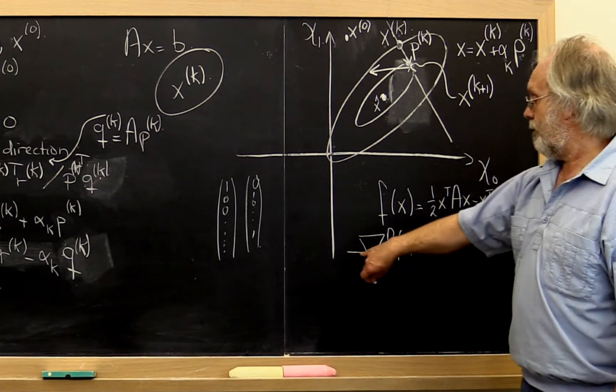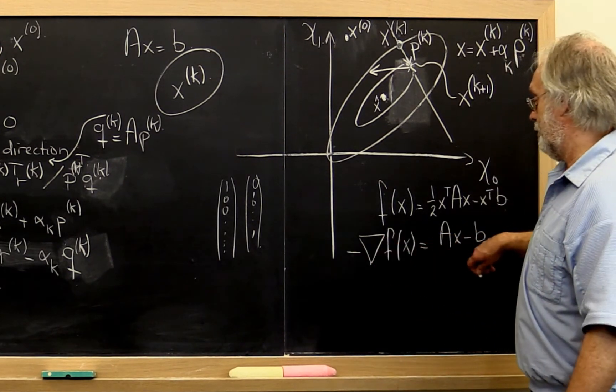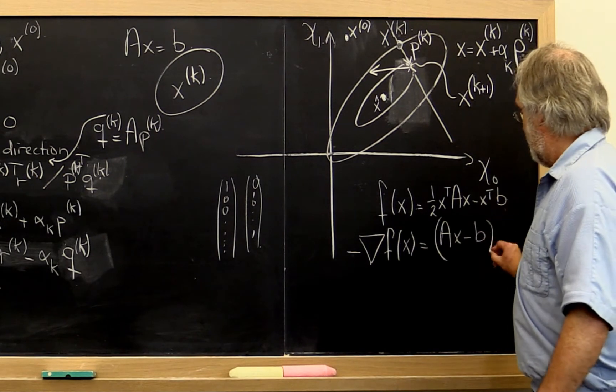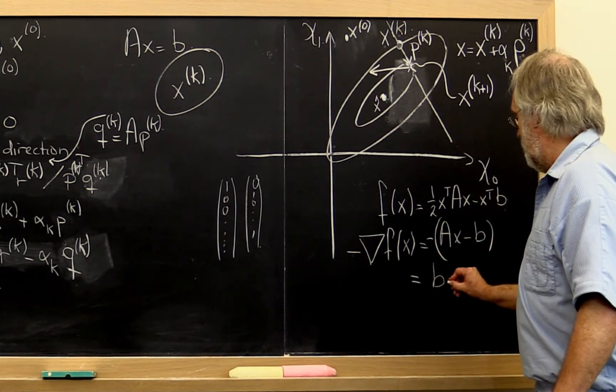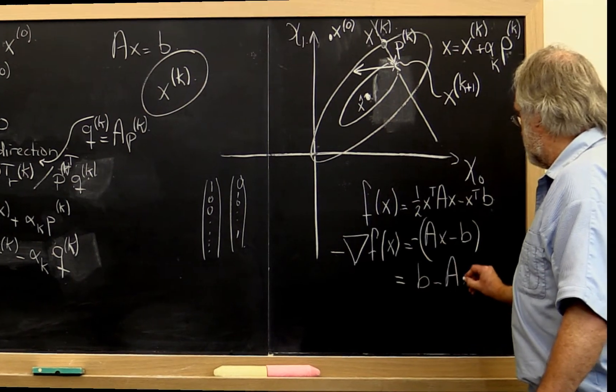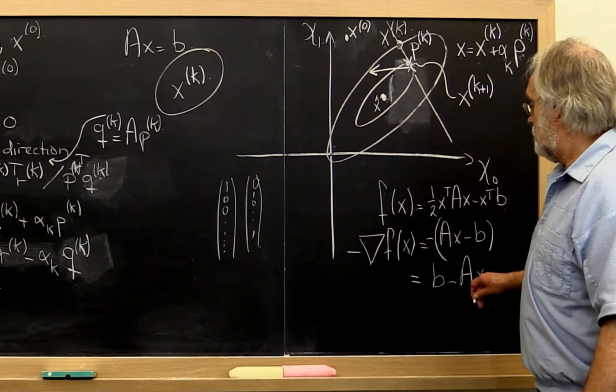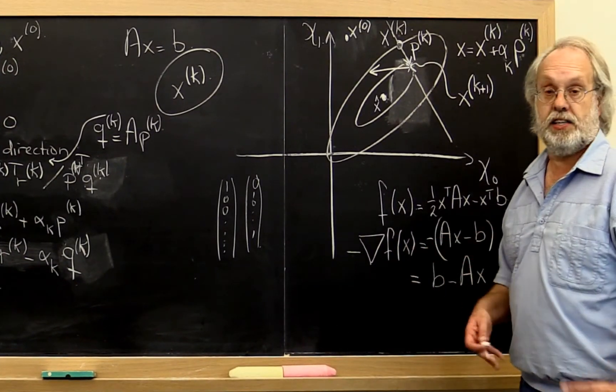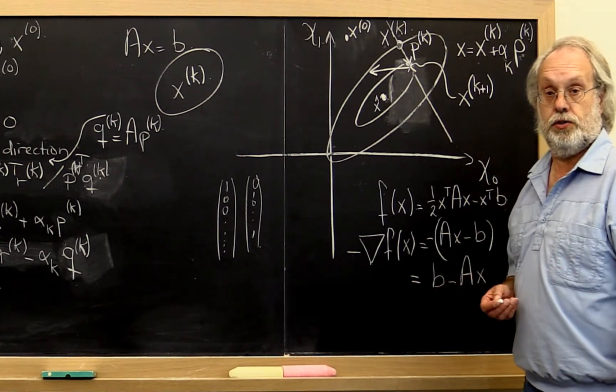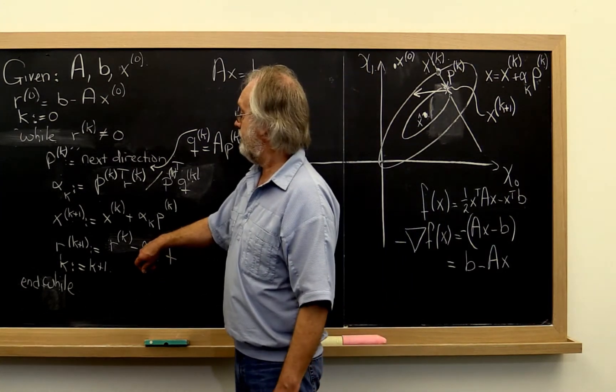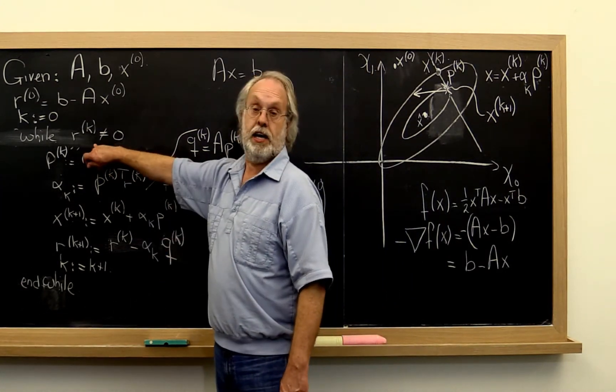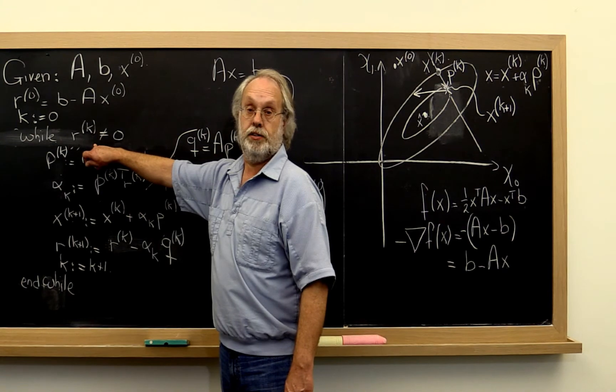And therefore, taking the negative of the gradient gives you the negative of this, and that is just equal to b minus Ax, which is the residual if you think of x as the current approximation to the solution. And notice that that residual is happily available every time in our iteration.